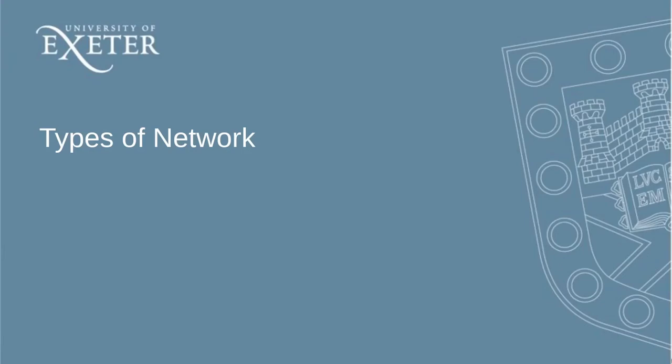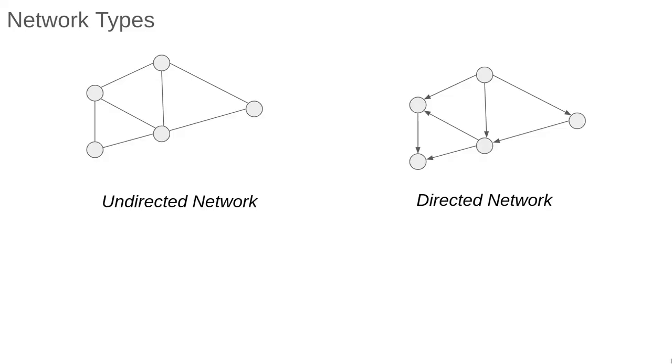In this video we'll talk about different types of networks. We've already seen directed and undirected networks. We'll mostly deal with undirected networks in this course. These are simpler to analyze while still being capable of representing many real systems, though directed networks can be very useful, especially for applications to transport problems.